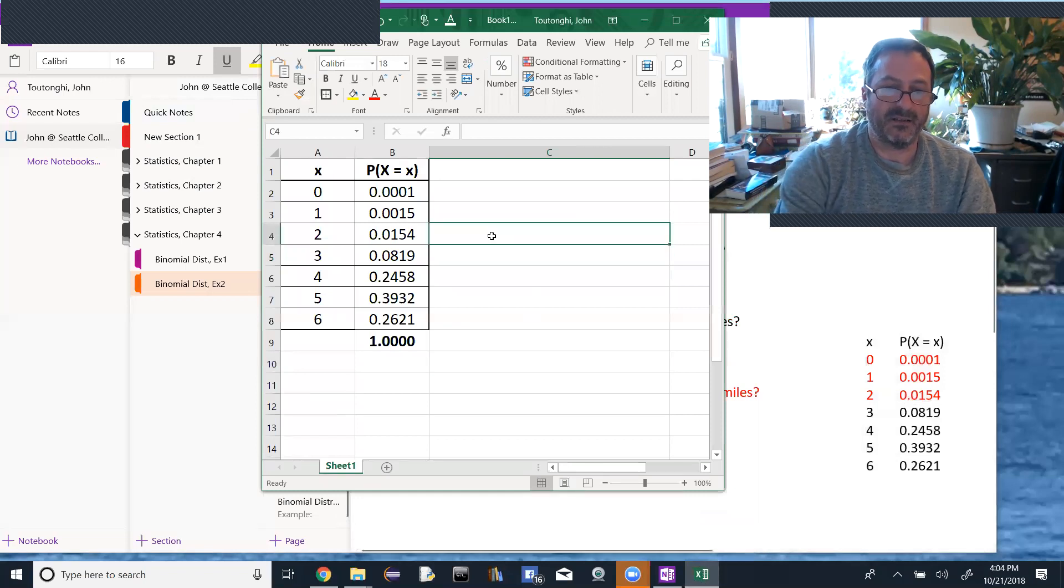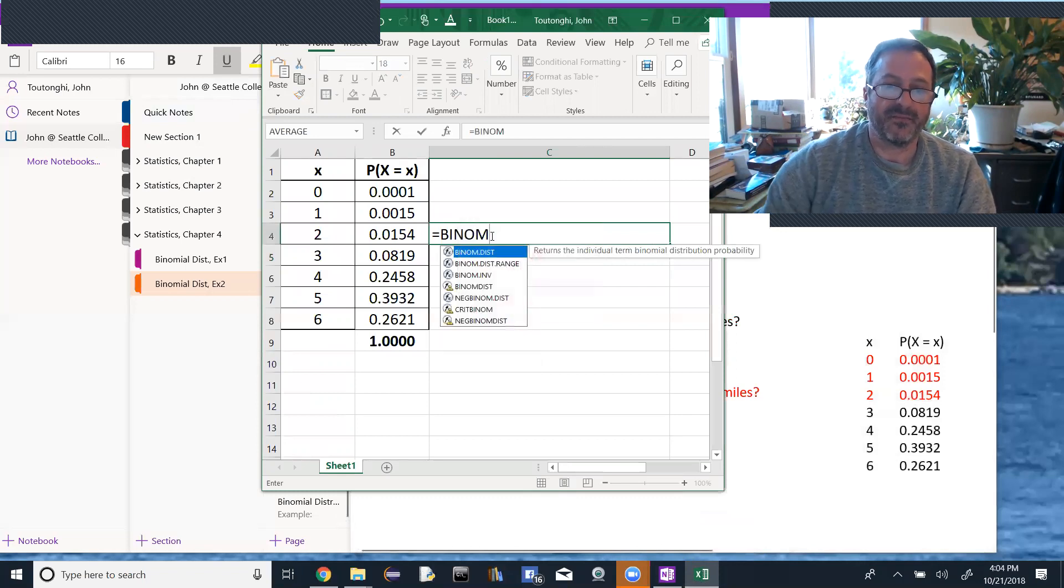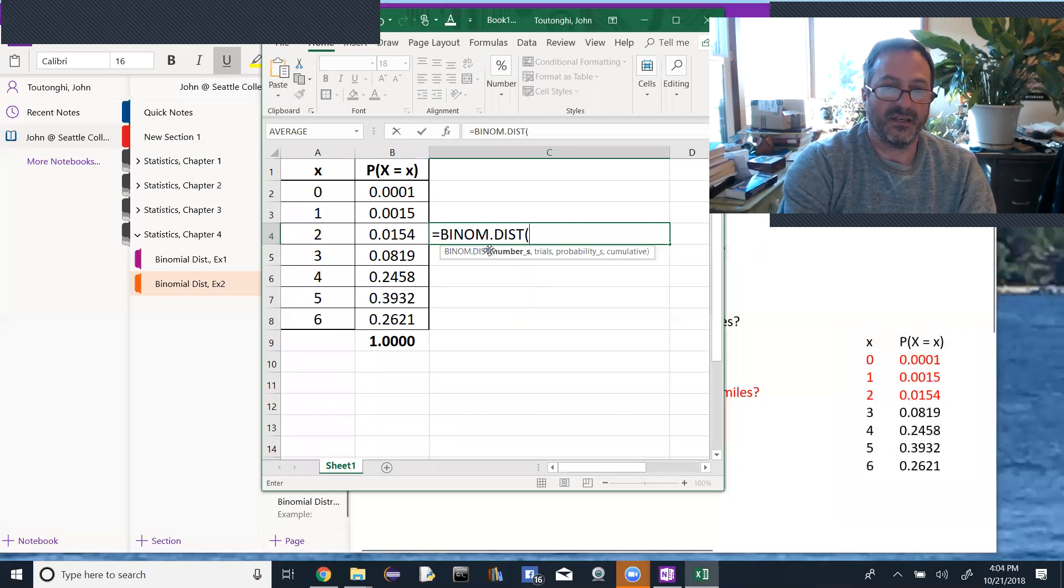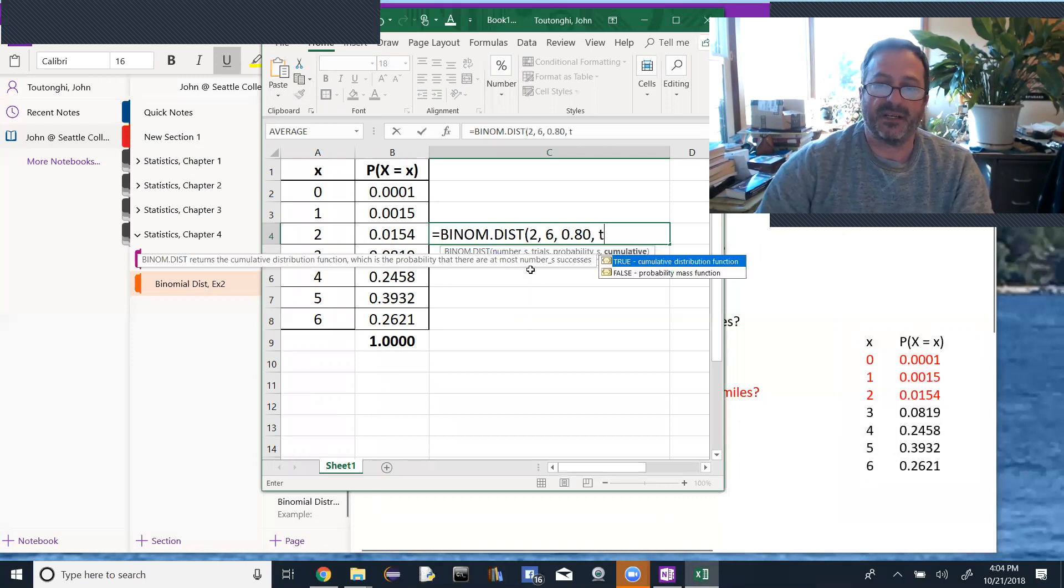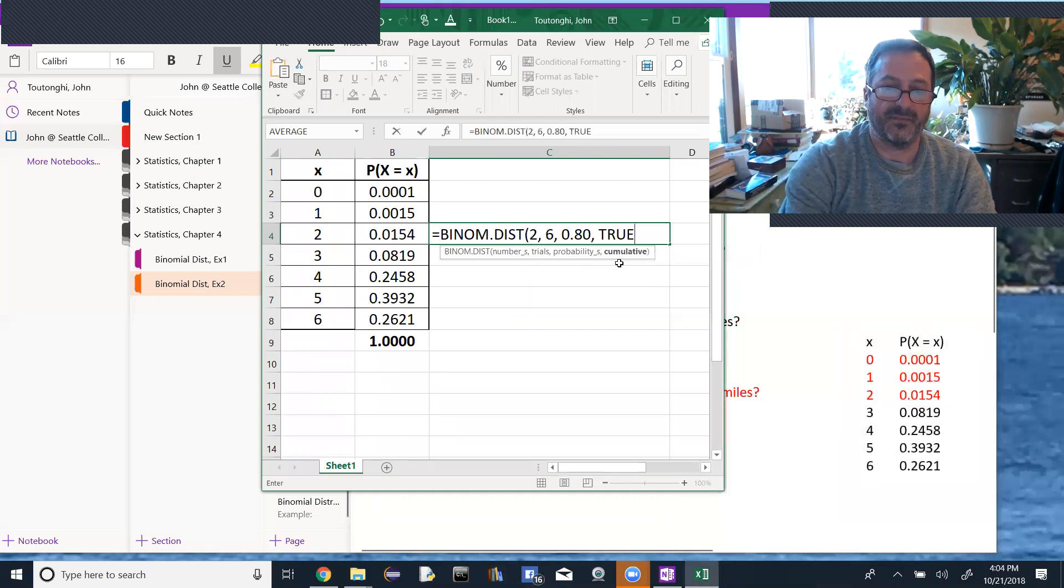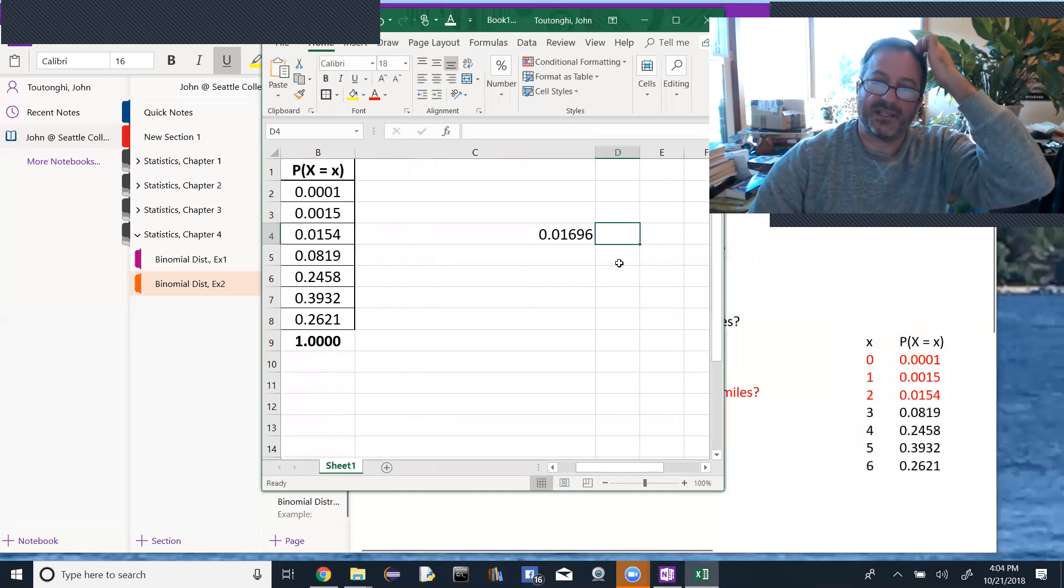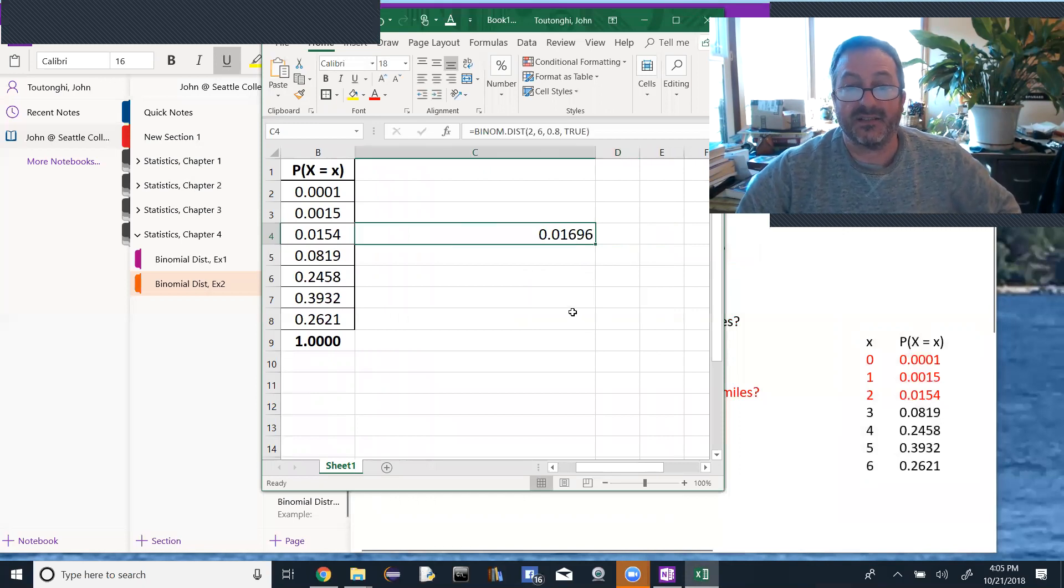Maybe I'll come right here and I'll go equals, binomial.dist. And the number of successes is going to be two, so x is less than or equal to two. Number of trials is still six, probability of success still 80%, and now cumulative, I'm going to type true, and I should get the same answer I got before. You can actually see here, the answer is actually 0.01696, but if I round that to four decimal places, 0.0170 as we got before.